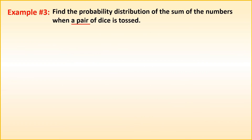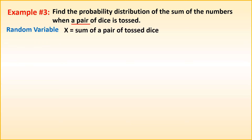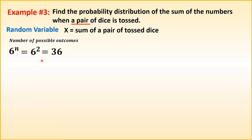Example 3: Find the probability distribution of the sum of the numbers when a pair of dice is tossed. Our random variable X is the sum of the pair of tossed dice. To find the number of possible outcomes, use the formula 6 raised to N. The 6 represents the faces of a die: 1, 2, 3, 4, 5, 6. N is the number of dice used. Since we have a pair, that is 2 dice. So 6 raised to the 2nd power equals 36 possible outcomes.